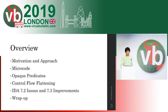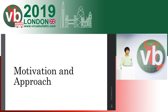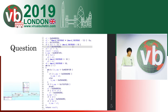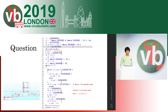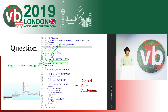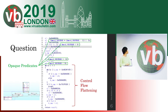This is today's overview. First, I explain my motivation and approach. What's the purpose of this function? This function just returns a value — so what are the other statements for? They are obfuscations used to make reverse engineering harder by changing code flow so that it is not linear. One obfuscation is called opaque predicates; the other is called control flow flattening.